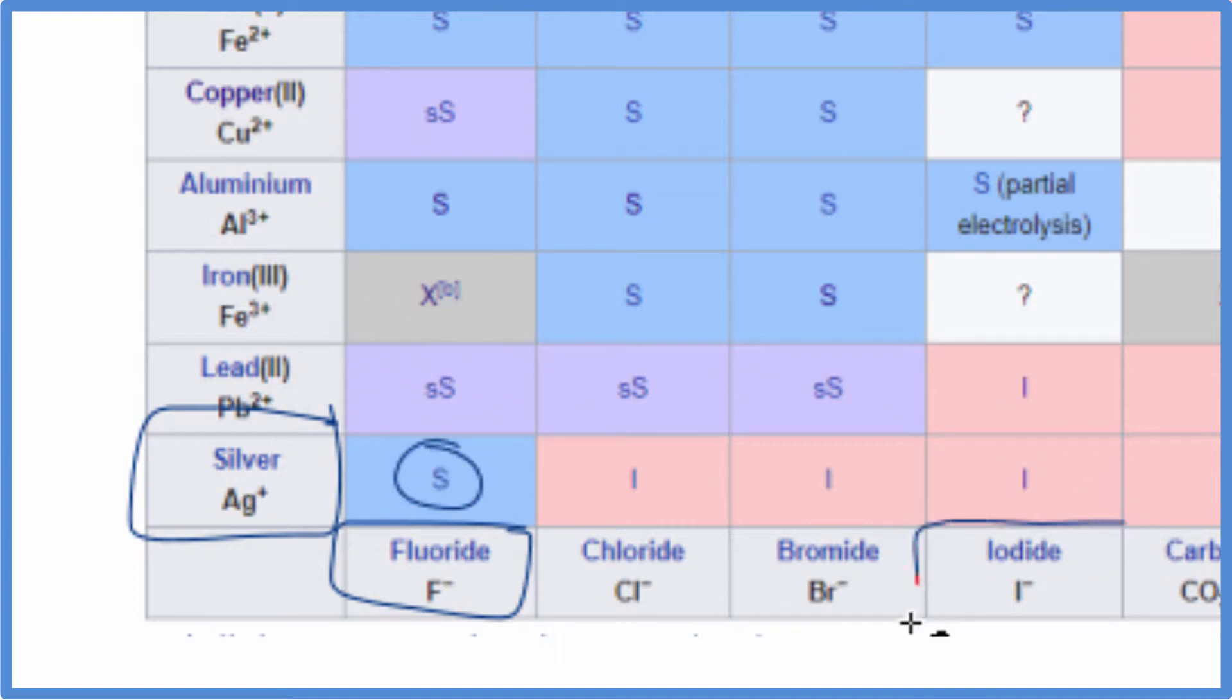We look at silver, and here's our iodide ion. We come over here and see this I, which means it's insoluble. So AgI is going to be insoluble. It'll be a solid, a precipitate in this reaction.